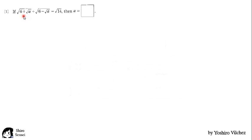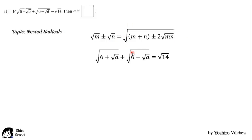If square root of 6 plus square root of a plus square root of 6 minus square root of a is equal to square root of 14, then the value of a is? So the topic here is radicals, especially the way to convert two simple radicals into a double radical.